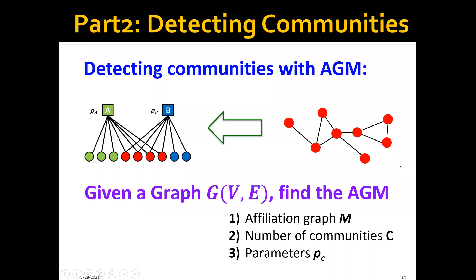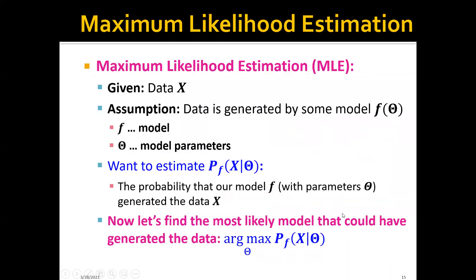So here's the big picture. Given a graph, we want to find the best AGM and its corresponding affiliation graph M, the number of communities C, and the parameters PC. The idea is to use maximum likelihood estimation or MLE.